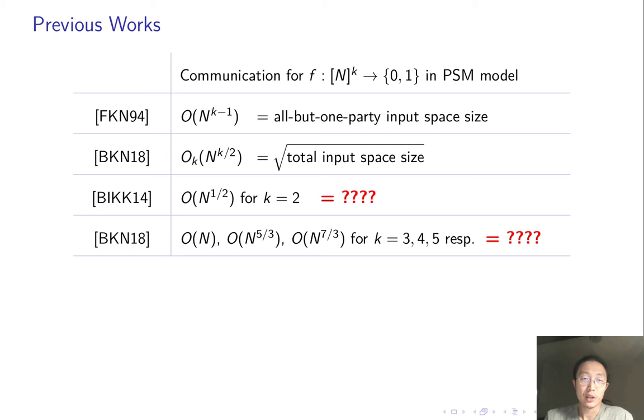In the literature, we also have more efficient PSM when the number of parties is small. How should we interpret these results? Is the case of small number of parties special? Or can they be generalized to larger k as well?